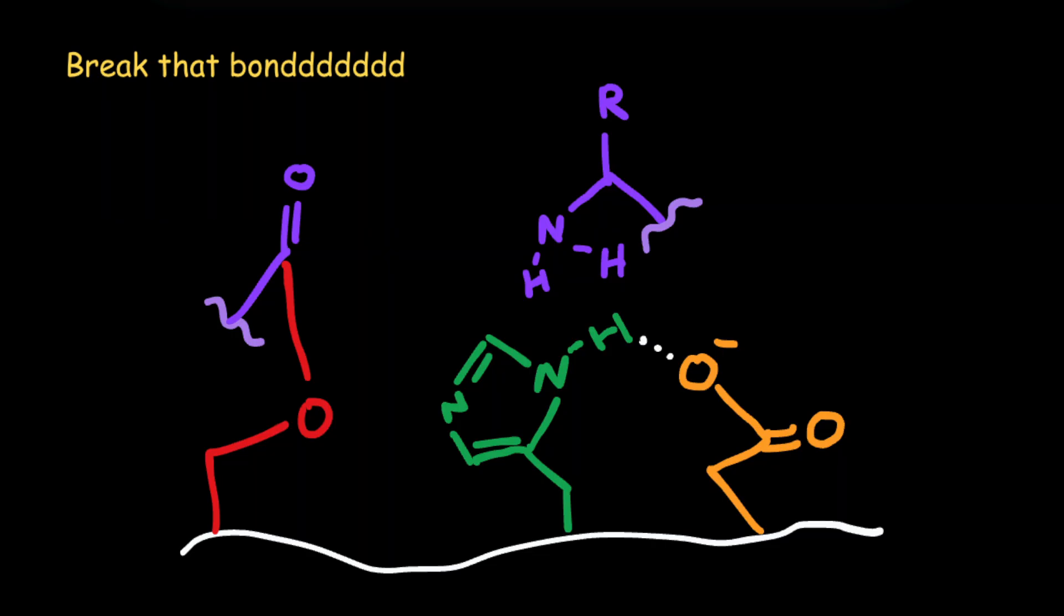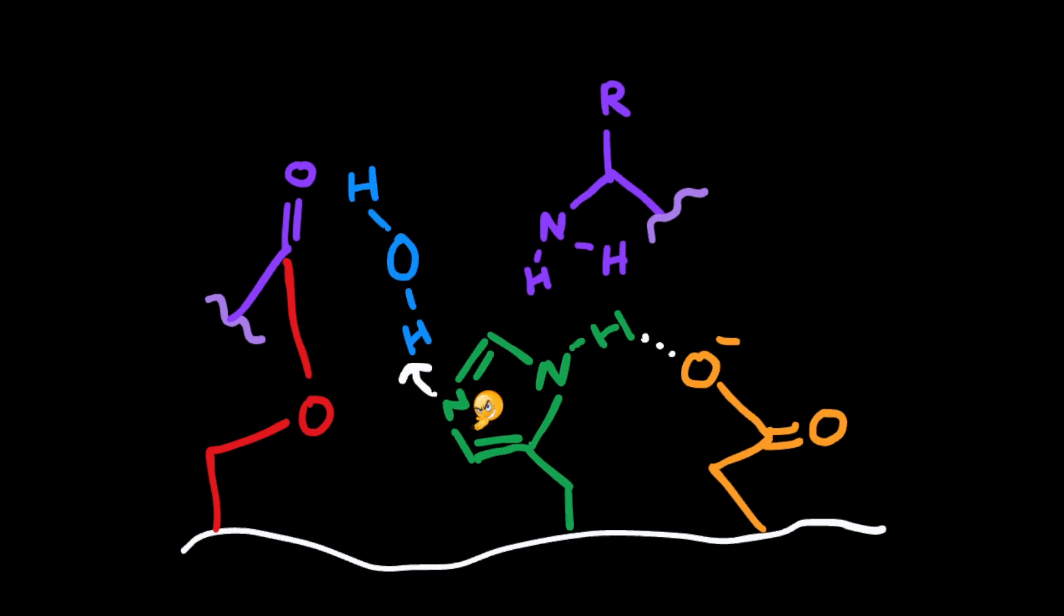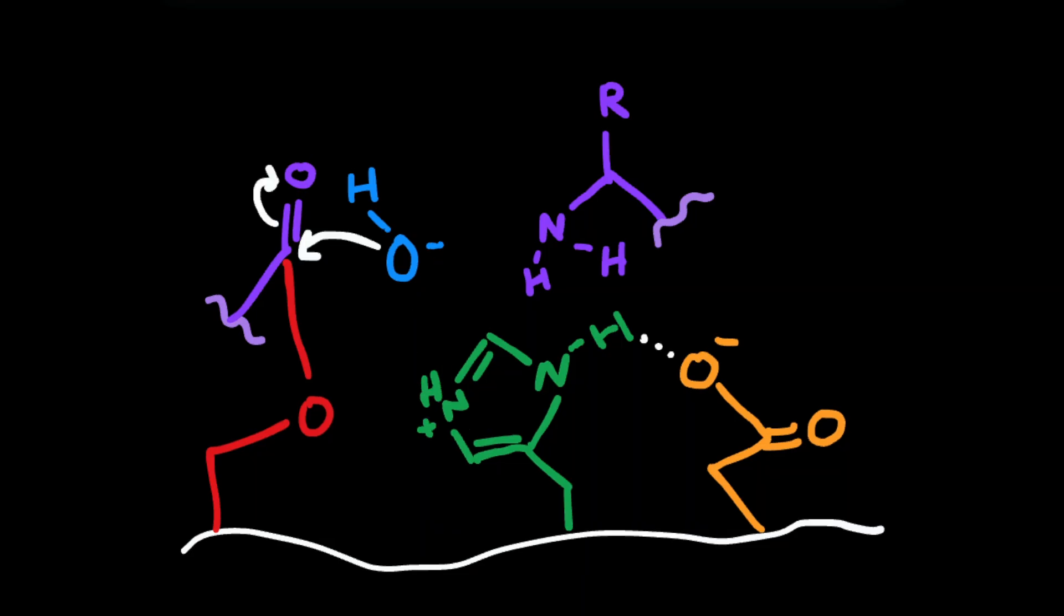And to get that left side of the polypeptide off, disconnected from the serine, we actually have water come in, which has its proton stolen by histidine. The resulting hydroxide attacks that carbonyl carbon again.